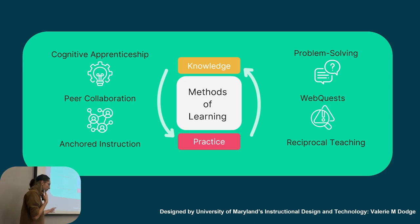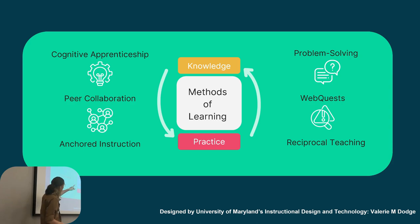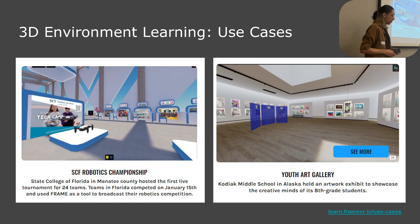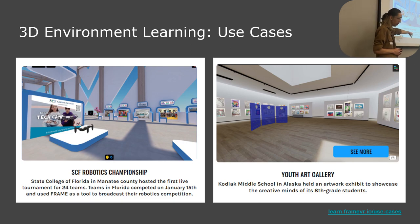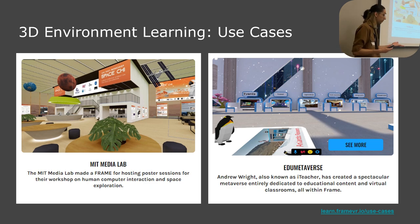Using constructivism and spatial learning creates a good cycle of knowledge and practice. Some ideas for identified constructivist methods in spatial learning include peer collaboration, web quests, scavenger hunts — things that make a real connection between content and learner. Frame and similar platforms have been around for about a decade and are used in various institutions: a state college in Florida using it for robotics championships and art galleries, MIT for a media lab collaboration space, and an entire school in Australia using these different methods to develop their classrooms.